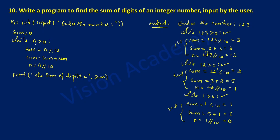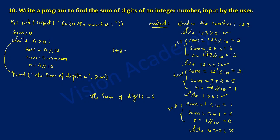Control transfers to the while loop once more. Now n is 0. Is 0 greater than 0? No — condition is false. Once false, control exits the loop and prints the result. Sum is holding the value 6. We entered 123, so 1 plus 2 plus 3 equals 6, confirming the correct answer.